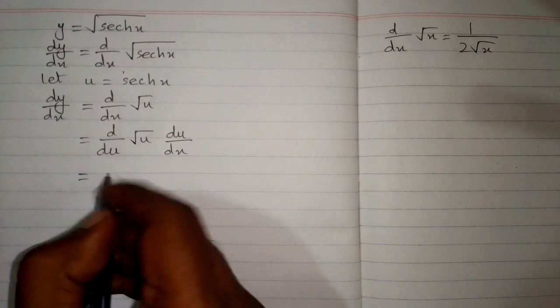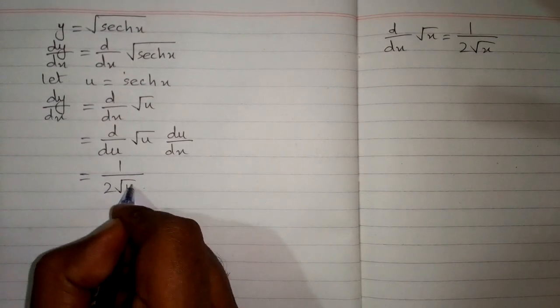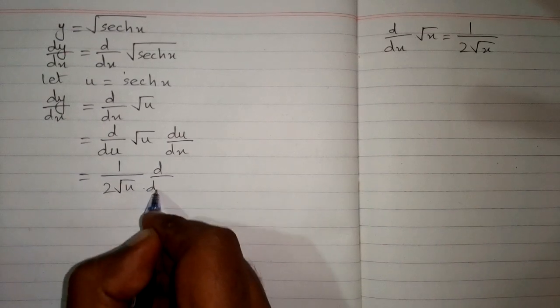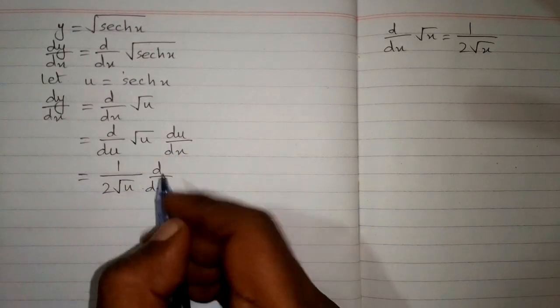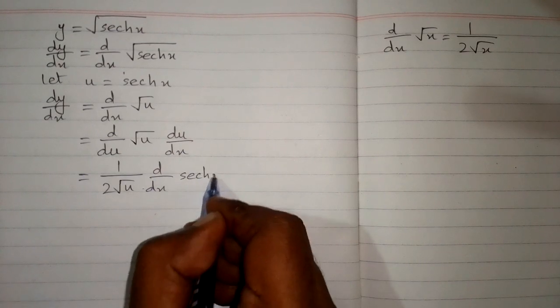So the derivative of square root of u is 1 upon 2 square root of u multiplied by the derivative of u. And u is hyperbolic secant x.